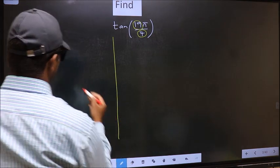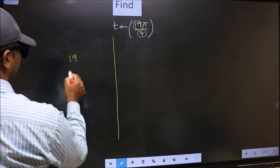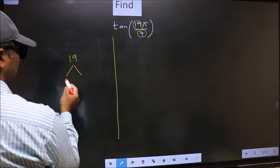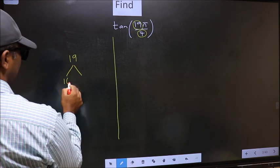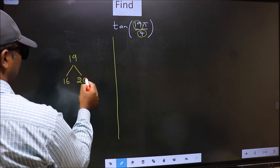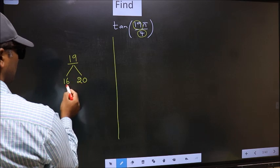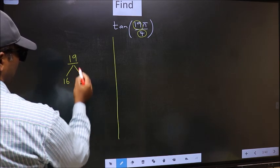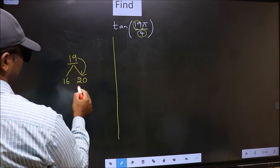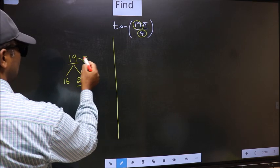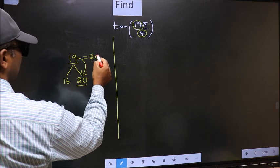What I mean is, 19 and here you write multiples of 4. That is, 16 and 20. Now 19 is close to which number? This is close to 20.